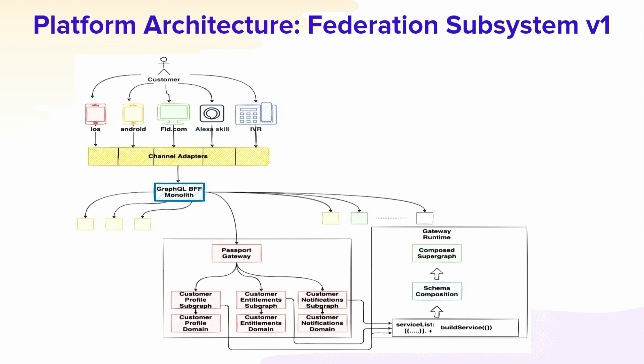We could have a passport gateway that would then federate out to these other subgraphs and become a federated system on its own, which could then be called by the existing GraphQL monoliths until we were ready to convert the whole system. We started here because we thought the impact was greater — the complexity of this resolver talking to multiple domains could help us prove that federation works and would help us understand how to do this at a much bigger scale.